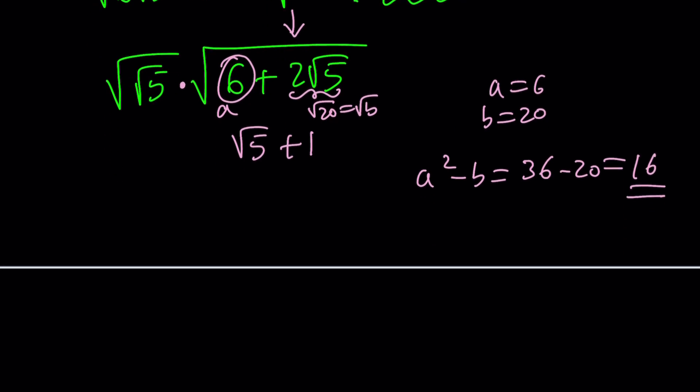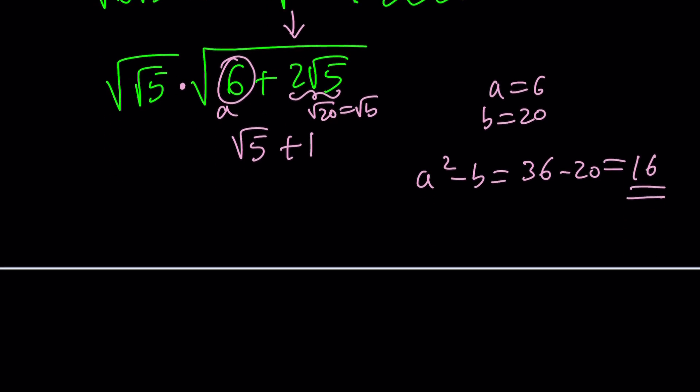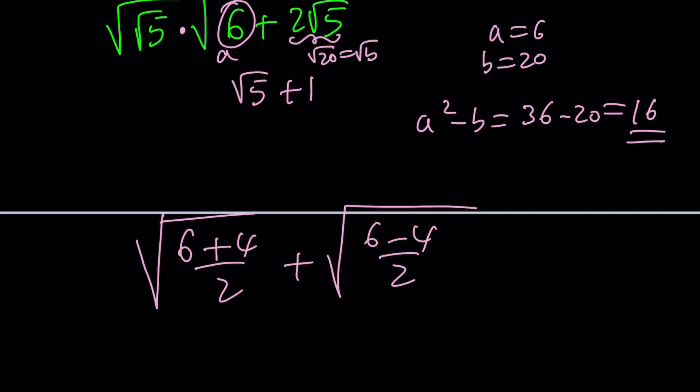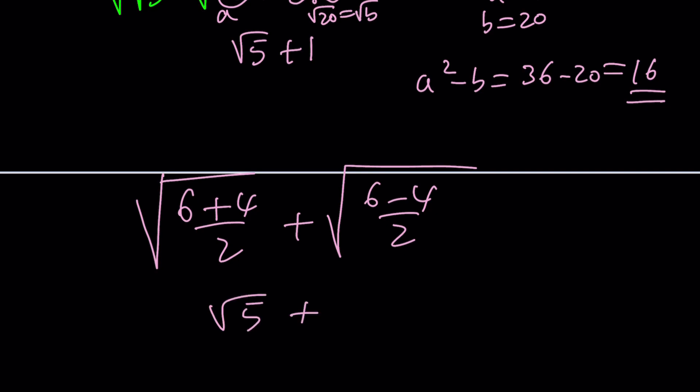Now we have the square root of a, which is 6, plus the square root of 16, which is 4 divided by 2. And then this becomes 6 minus 4 divided by 2. This is square root of 5. And this is square root of 1, which is 1. Awesome.